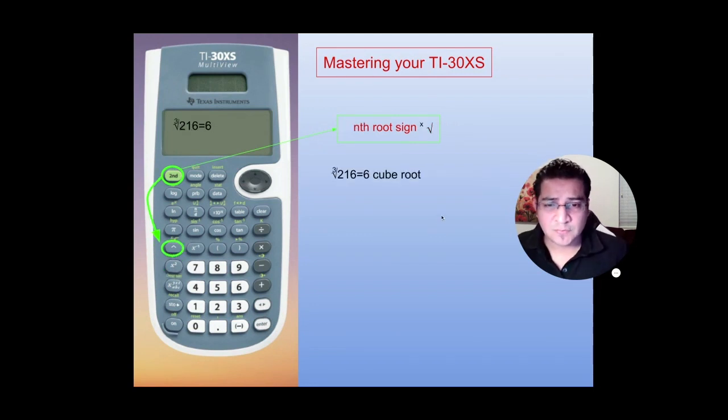To activate the cube root or any other root, the nth root, you can actually press second function and the caret key, and then you press the number.